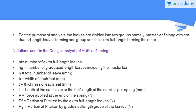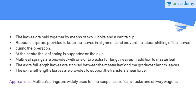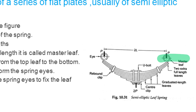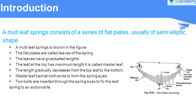For the purpose of analysis, the leaves are divided into two groups: the master leaf along with graduated-length leaves forming one group, and the extra full-length leaves forming the other. To simplify the design analysis, we divide the multi-leaf spring into two parts — one part consists of the master leaf and the graduated-length leaves, and the other part consists of the two extra full-length leaves, which are there to resist the transverse shear load.